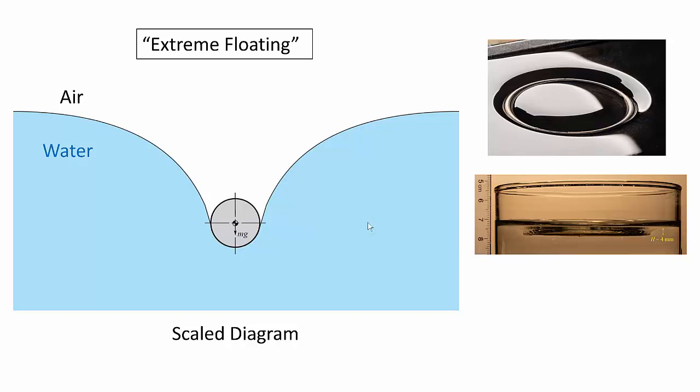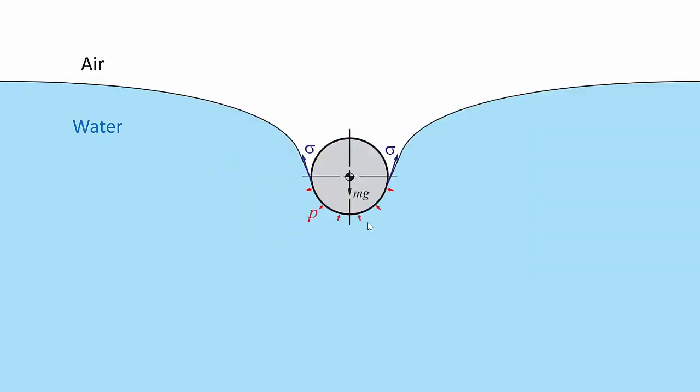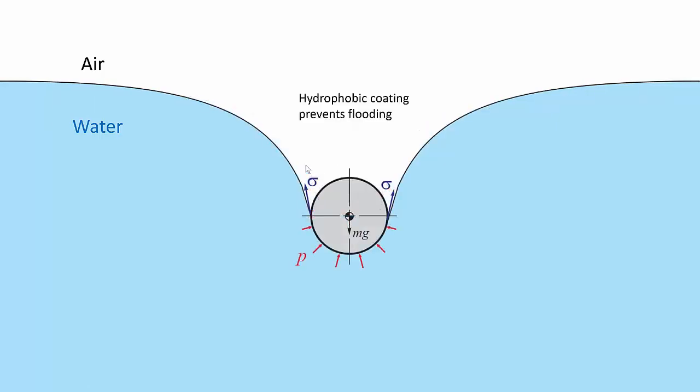Now let me explain some of the interesting mechanics of this problem. When the ring is initially placed on the water surface, you have the surface tension forces on the inner and outer surfaces of the ring, but surface tension isn't sufficient to balance the ring's weight. So the ring continues to sink.